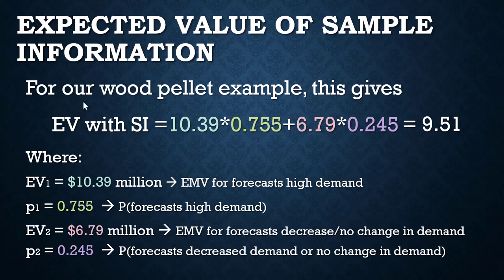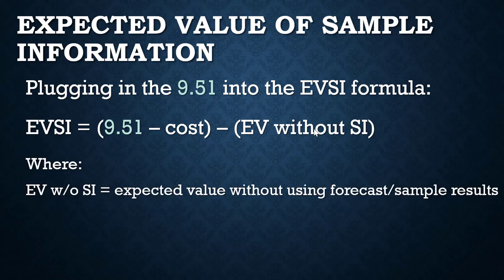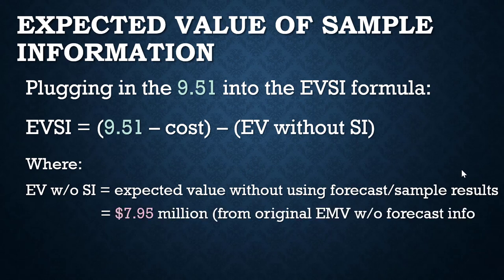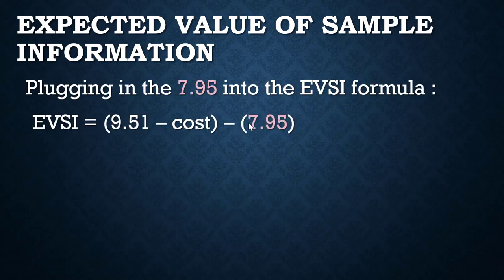Plugging in the values gives us 9.51 million for the expected value with sample information. Now we take that 9.51 and use it in our formula to get the expected value of sample information. We also need the expected value without sample information — that's just a regular expected value we've calculated before, which is 7.95 million.